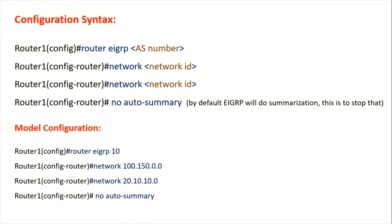To configure EIGRP, first enter 'router eigrp' followed by the autonomous system number. Once done, EIGRP is enabled on the router. Then advertise all directly connected networks using the 'network' keyword followed by the network ID. The 'no auto-summary' command prevents automatic summarization — for example, if networks 10.0.0.0/24, 10.0.10.0/24, and 10.0.20.0/24 are advertised without it, EIGRP would summarize them all as 10.0.0.0/8.